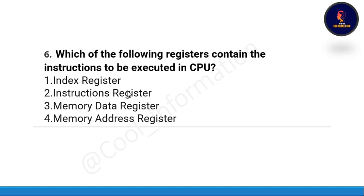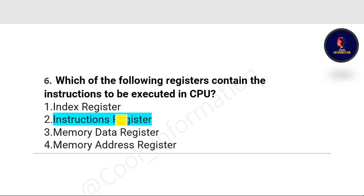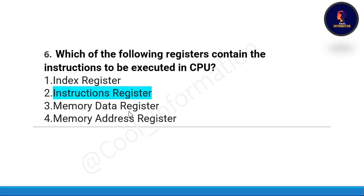Next question: which of the following registers contains the instruction to be executed in the CPU? Option A: index register. Option B: instruction register. Option C: memory data register. Option D: memory address register. The correct option is option B, which is instruction register.